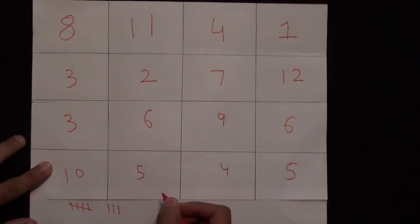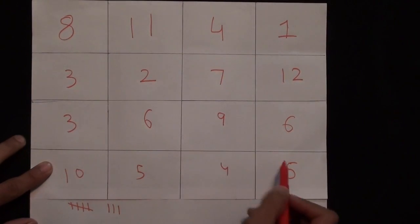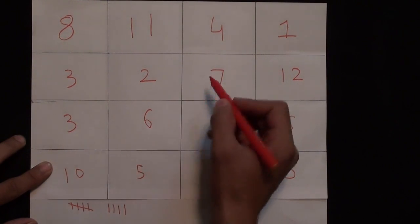Now we can add the diagonals too: it equals 24. 10 plus 6 plus 7 plus 1 also equals 24.